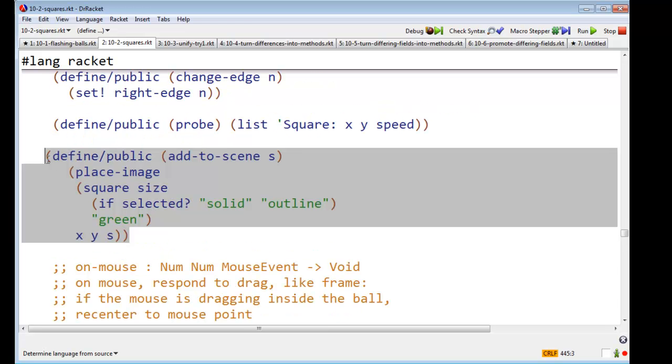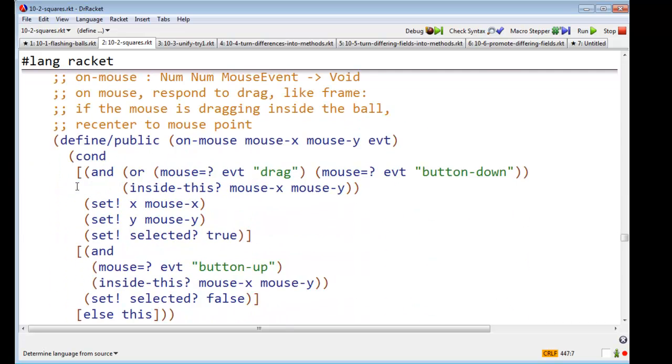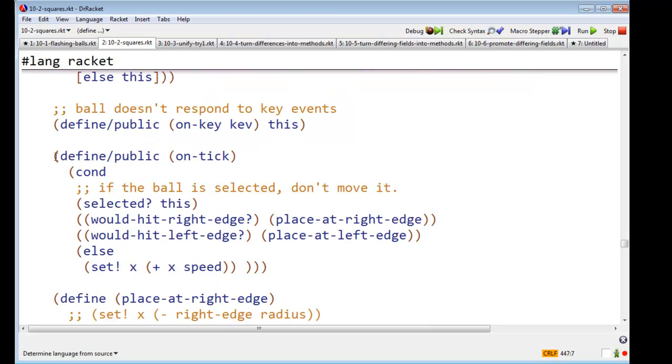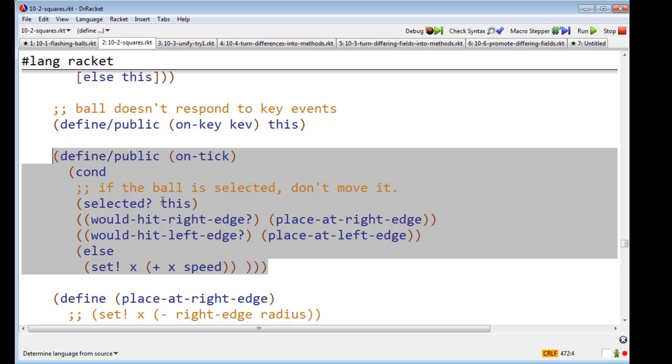Add-to-scene will be different, because after all, it's going to be a different image. On-mouse is going to be pretty much the same. On-tick is going to be the same. It says, if the ball is selected, don't move it.